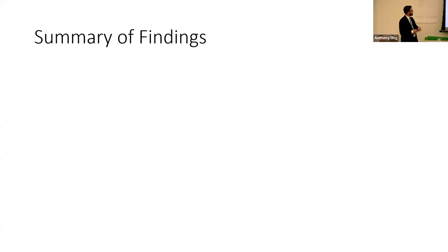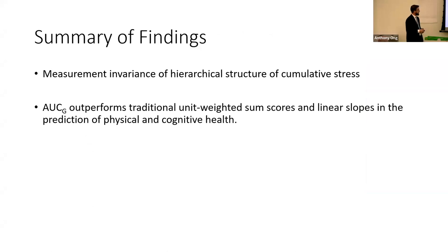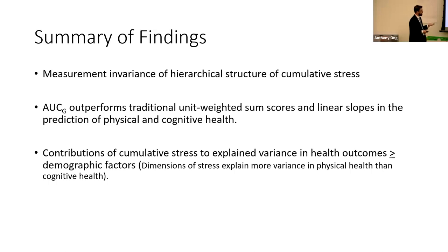To summarize the findings: we have measurement invariance of our hierarchical structure of cumulative stress. Area under the curve with respect to ground outperforms traditional unit-weighted sum scores and random linear slopes in predicting physical and cognitive health outcomes. The contributions of cumulative stress to explained variance in health outcomes is typically greater than or equal to demographic factors, with the caveat that dimensions of stress explain more variance in physical health outcomes than cognitive health outcomes. If we think age, sex, and race matter for these outcomes, we must concede that cumulative stress matters just as much or more.